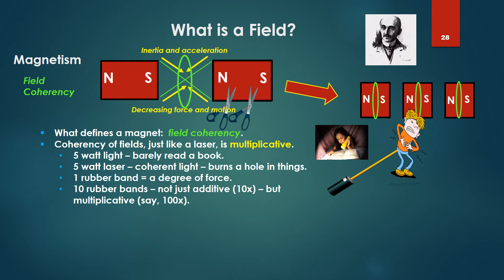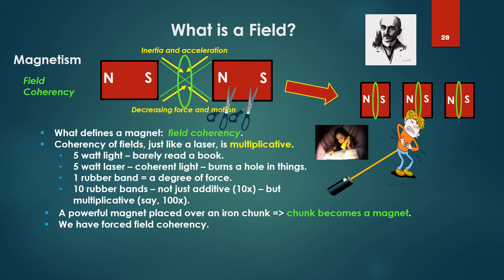What defines a magnet as opposed to a piece of ordinary iron is field coherency. Coherency of light feels just like a laser — multiplicative. With a 5-watt light I can barely read a book; with a 5-watt laser, I have a coherent form of light with extremely high field coherency that will burn a hole in things. If I have one rubber band I have a certain degree of force; if I have 10 rubber bands I have a force that's not just additive — not 10x — but multiplicative, say 100 times the force of one rubber band. A powerful magnet placed over an iron chunk: the iron chunk becomes a magnet — we have forced field coherency.